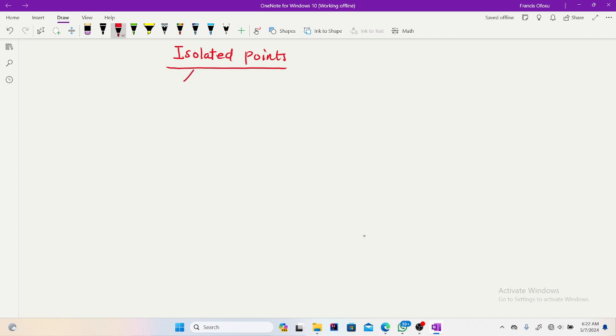So the word isolated is an English word meaning something which is separated from others. So obviously, it should give you the idea of what isolated point does. It's any point which is separated from the rest of the population or the rest of the other points which we're talking about.